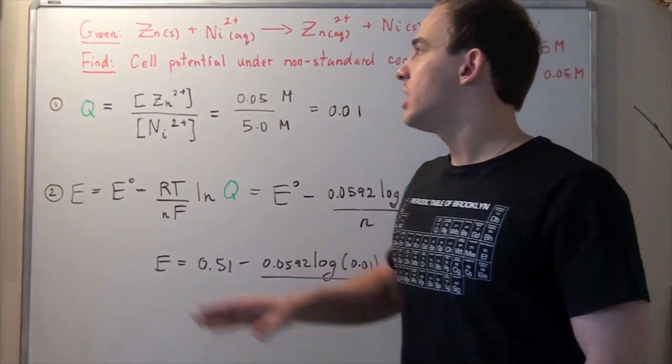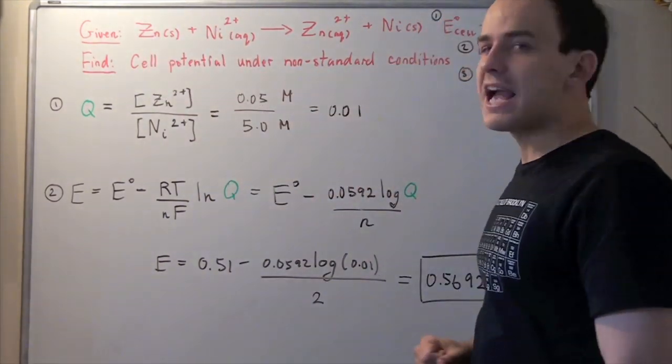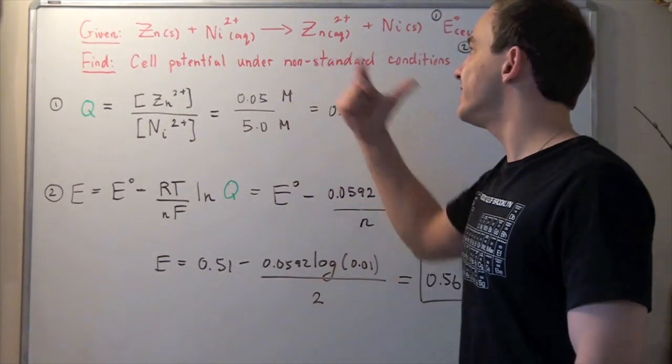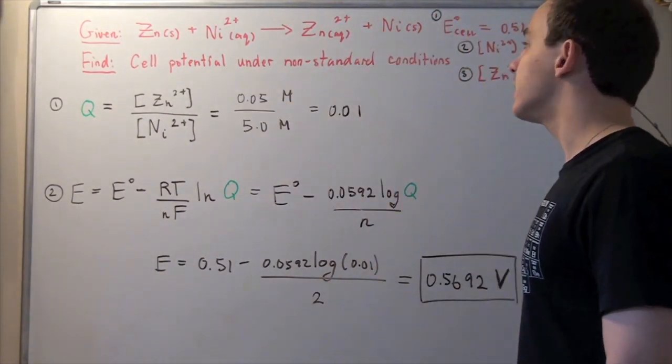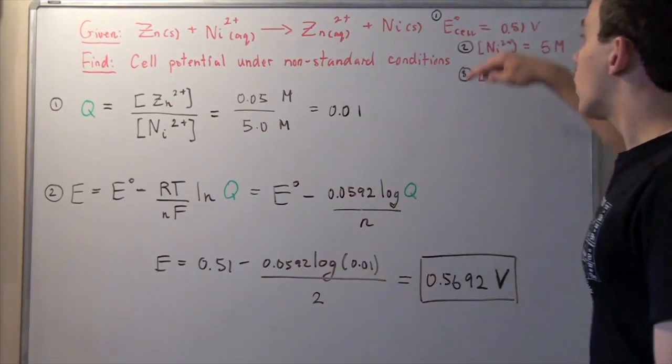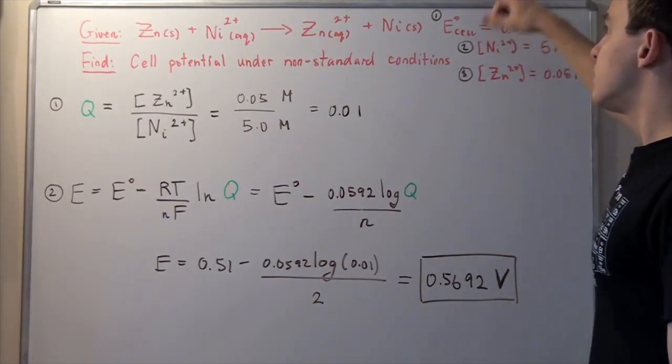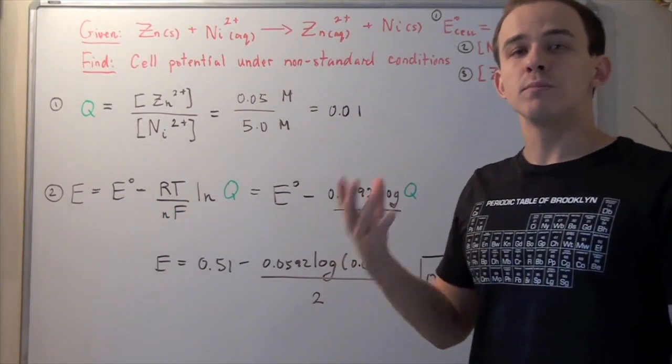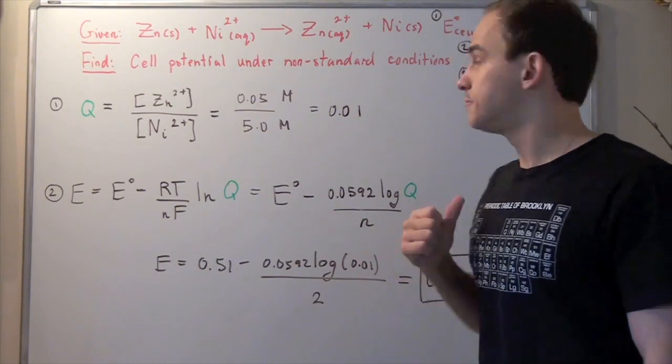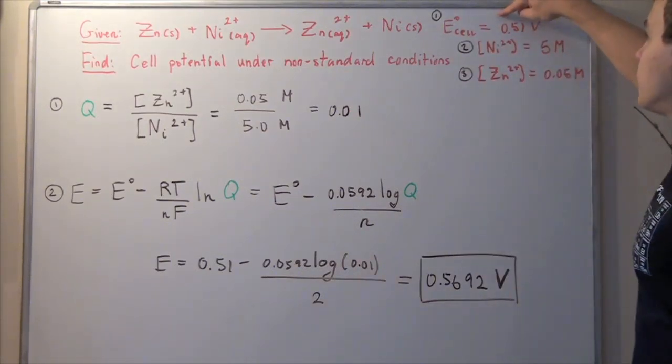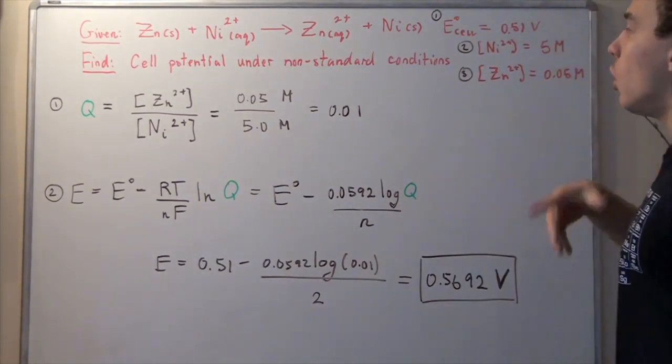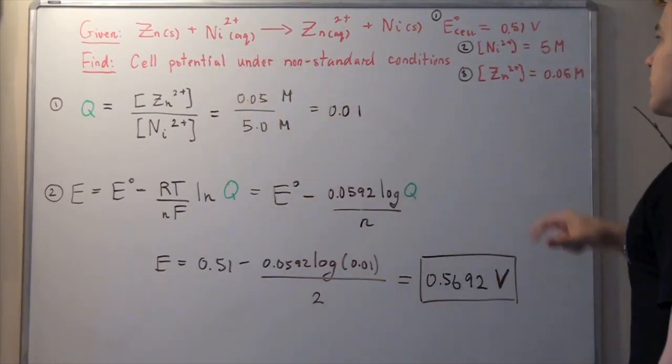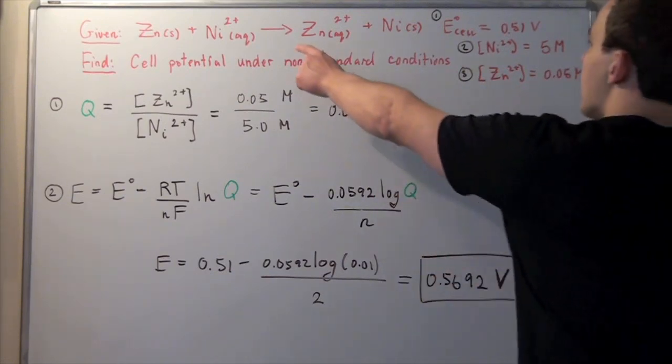In this example we begin with the following redox reaction: zinc solid reacts with nickel in the aqueous state to produce zinc in the aqueous state and nickel solid. We are also given our cell potential of 0.51 volts under standard conditions of one bar pressure and one molar concentration. We're also given the concentrations of nickel and zinc in the aqueous state.